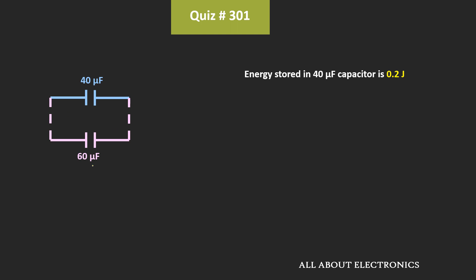So here, we have been asked to find the overall energy of this equivalent system. Let's say the first capacitor is C1 and the second capacitor is C2. First of all, let's find the charge being stored across capacitor C1 — that means before the connection of C2.